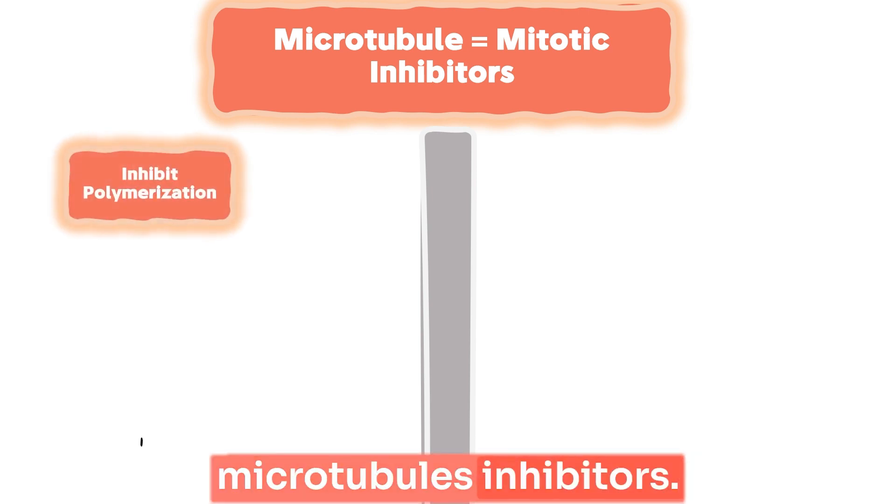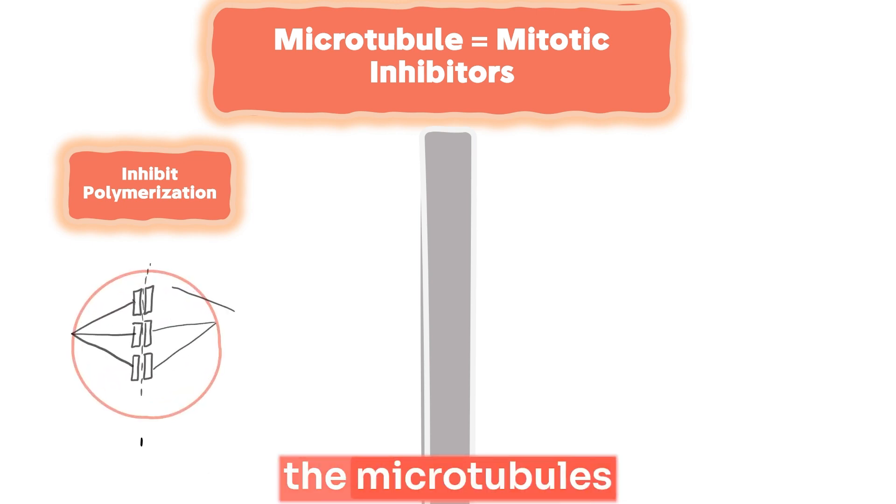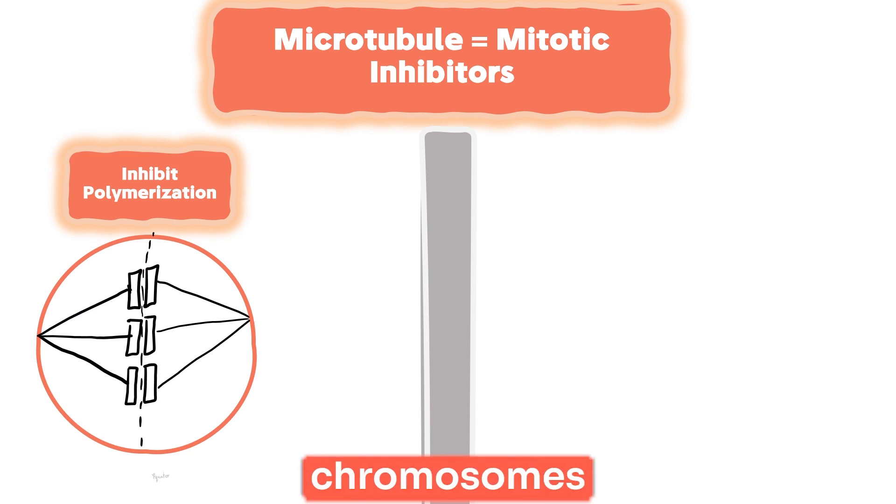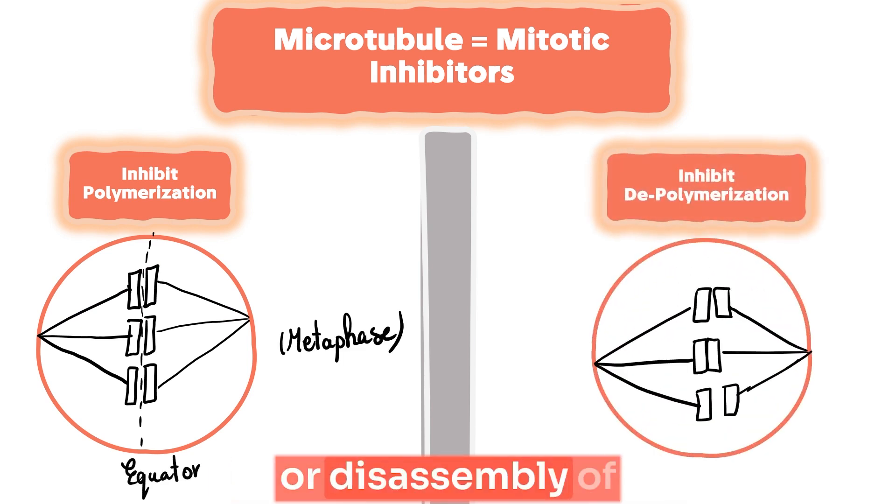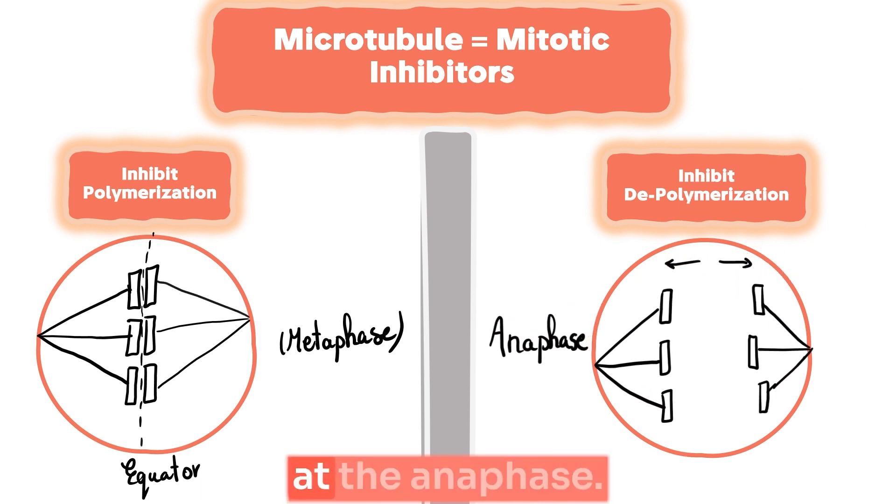There are two classes of microtubule inhibitors. The first one inhibits the polymerization of the microtubules, preventing the alignment of chromosomes at the equator. The second class inhibits the depolymerization or disassembly of microtubules, preventing the separation of sister chromatids at the anaphase.